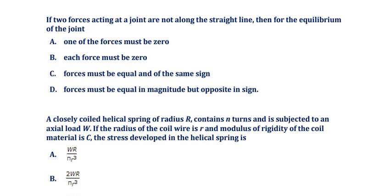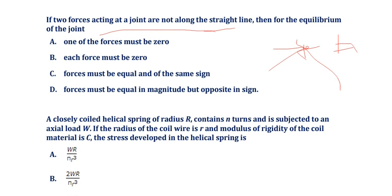If two forces acting at a joint are not along the same straight line, then for the equilibrium of the joint the options are: one force must be zero; each force must be zero; forces must be equal and of the same sign; or forces must be equal in magnitude but opposite in sign. The correct answer is option B — each force must be zero — since the two forces are not collinear.